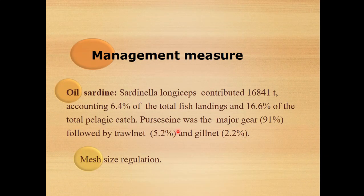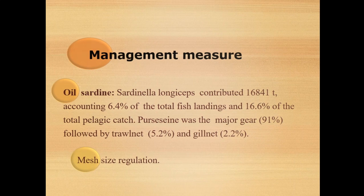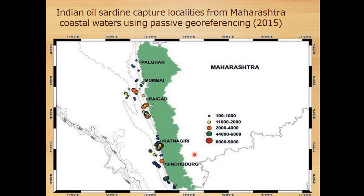About management measures: Sardinella longiceps contributed 16,481 tonnes, representing 6.4% of total fish landings and 16.6% of the total pelagic catch. Major gears account for 91%, followed by trawl net and gill net. Mesh size regulation is also considered. The Indian oil sardine capture is recorded from Maharashtra locations including Mumbai, Raigad, Ratnagiri, and Sindhudurg.